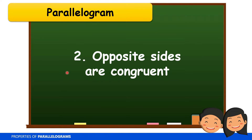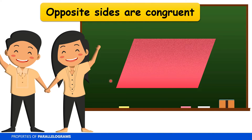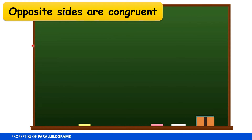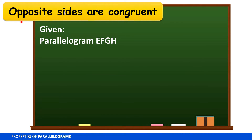Let's proceed with the next property. In a parallelogram, opposite sides are congruent. So this side is congruent to its opposite side — that's why we have tick marks. For example, if this side is 11 centimeters, that means the opposite side is also 11 centimeters. If this side is 7 centimeters, the side opposite to it is also 7 centimeters.